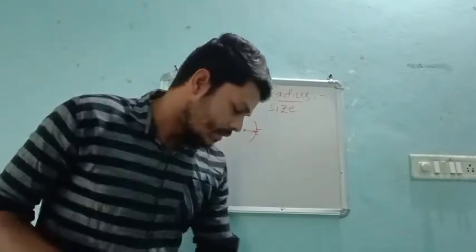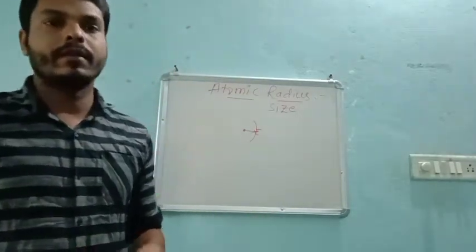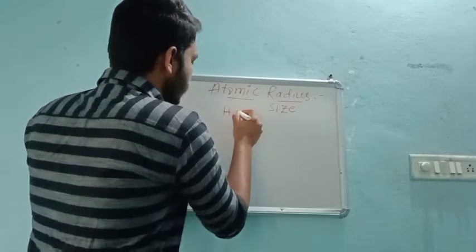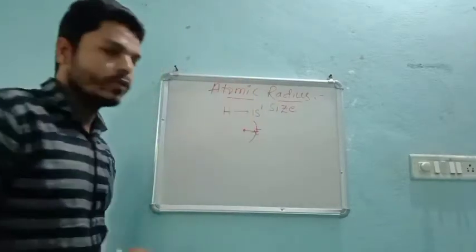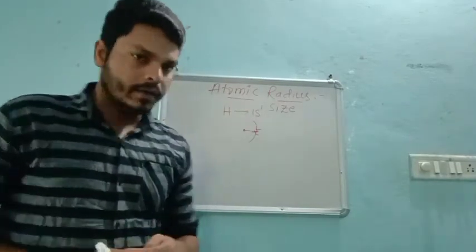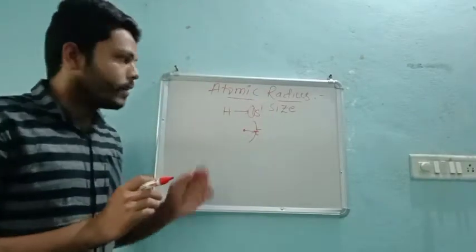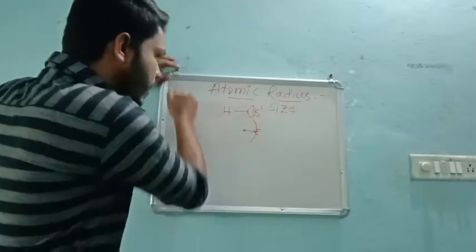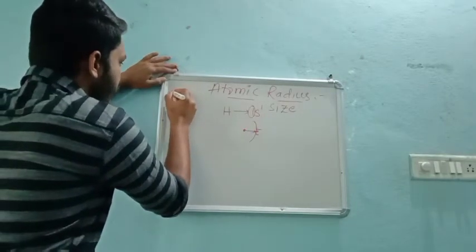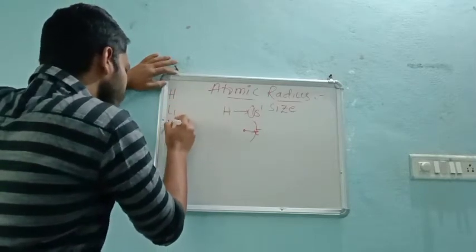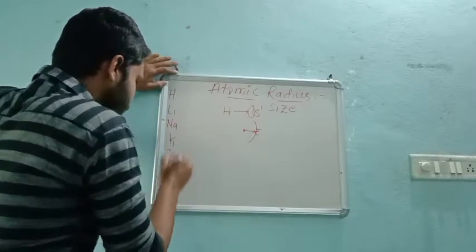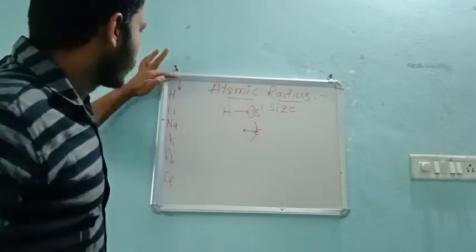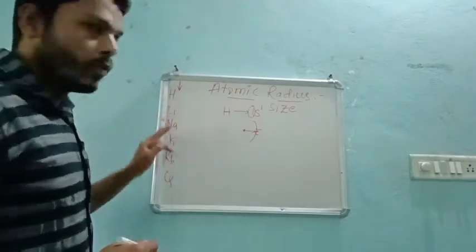How to identify the atomic radius — that depends on the number of electrons present and on the valence shell also. For example, in hydrogen we have only one electron, whose electronic configuration is 1s1. The electronic configuration only decides what is the size of a particular element. Let us write some names: helium, lithium, sodium, potassium, rubidium, and cesium — this is a group.